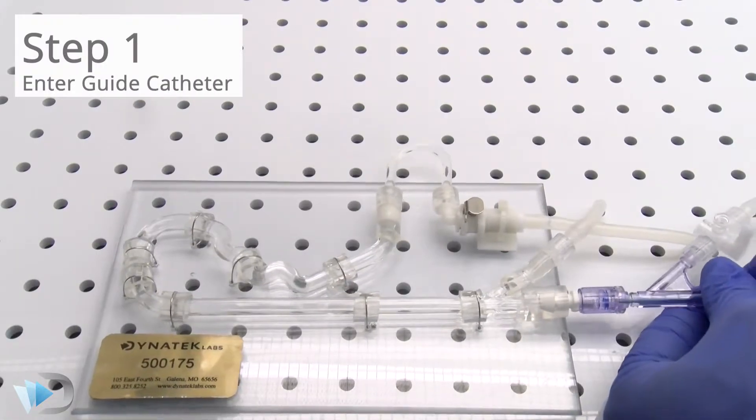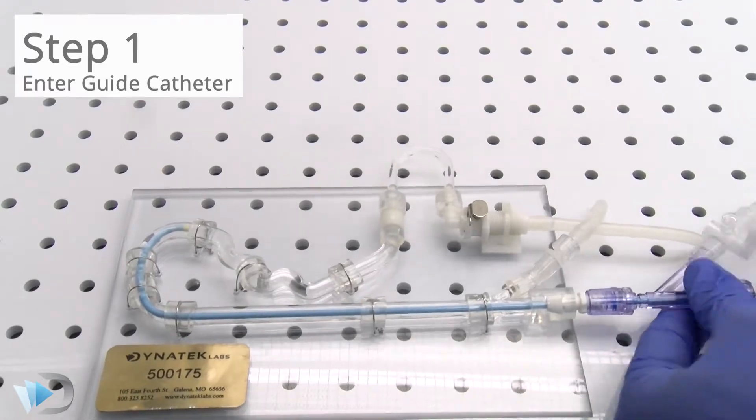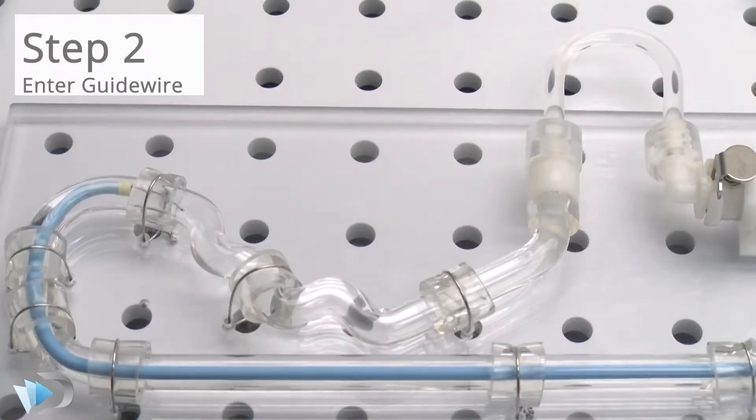To begin the test, a guide catheter is inserted into the flow loop. Then, a guide wire is advanced through the catheter and into the deployment site.